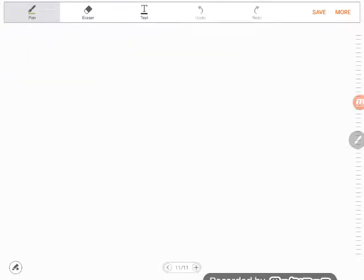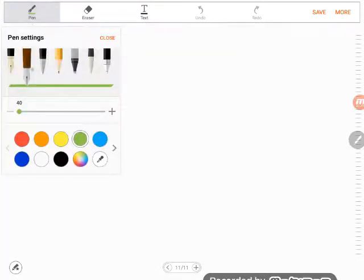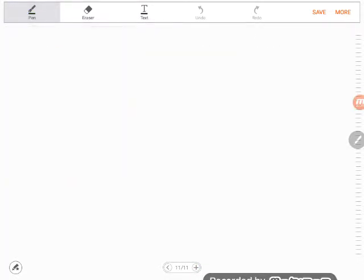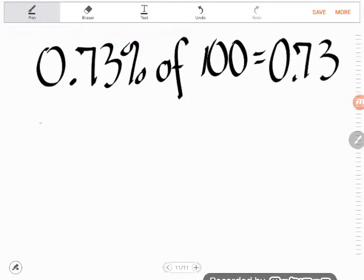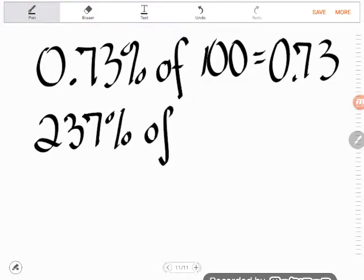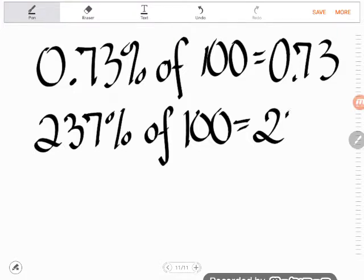I'll do two more just so you can see it, but I'm not going to harp on this because I think you get it. So, like, even if they had a funky thing like 0.73 percent of 100, as long as it was out of 100 like it is here, that number's not going to change. It's just going to be 0.73. Or it could be 237 percent of 100. Again, since it's out of 100, it would just be 237. And I could just drop that percent with no consequence.